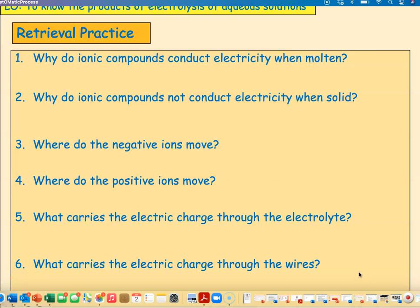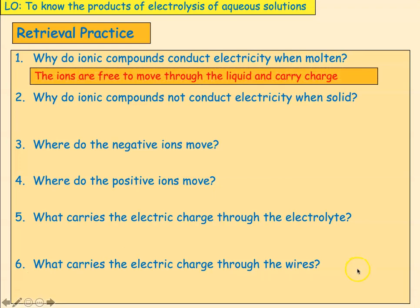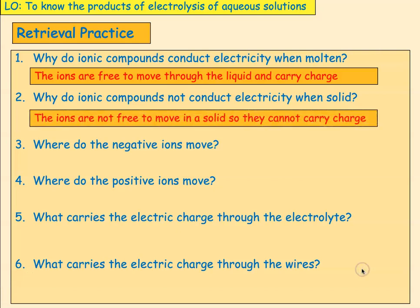Let's go through the answers. Why do ionic compounds conduct electricity when molten? They conduct electricity when molten because the ions are free to move through the liquid and carry the charge. Two things are needed for conduction of electricity: charged particles, and they must be able to move freely. Why do ionic compounds not conduct electricity when solid? They don't because the ions are not free to move in a solid, so they cannot carry the charge.